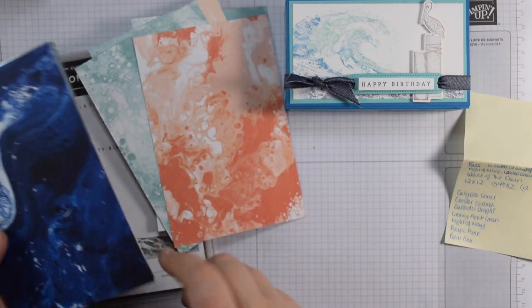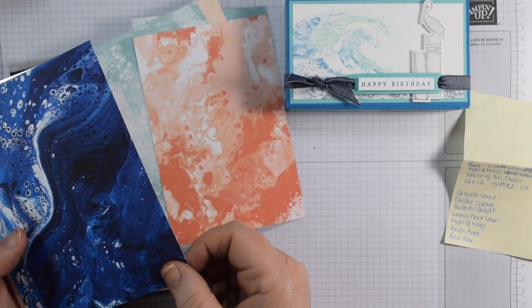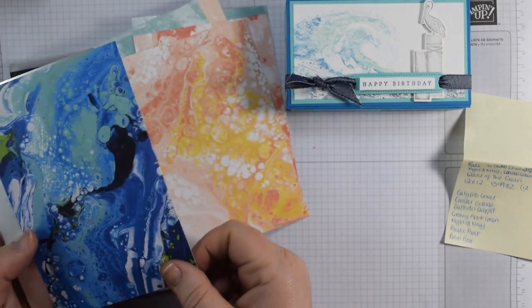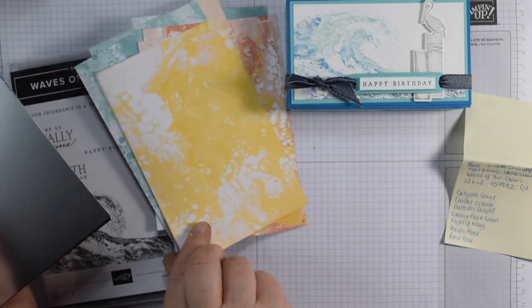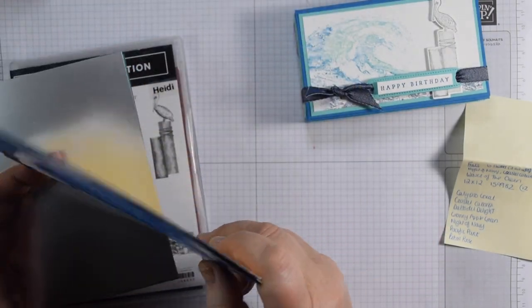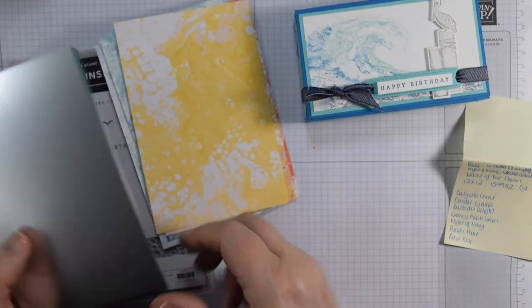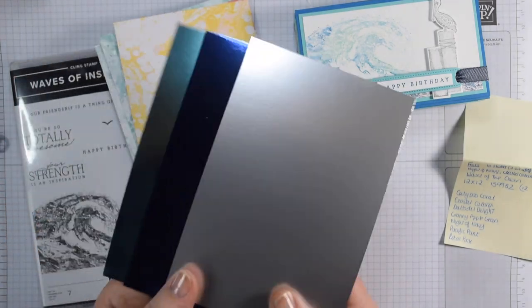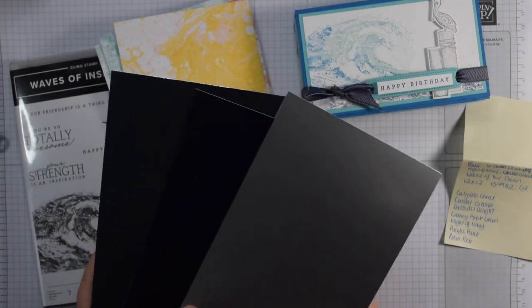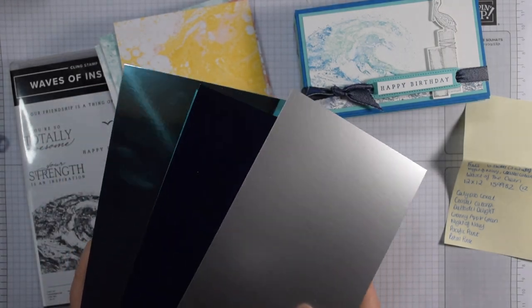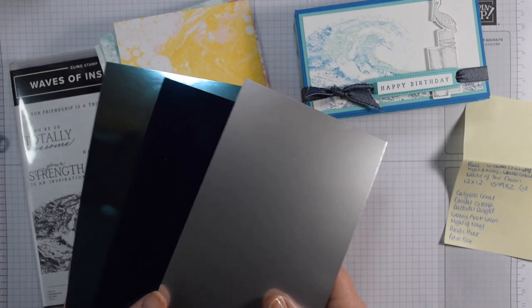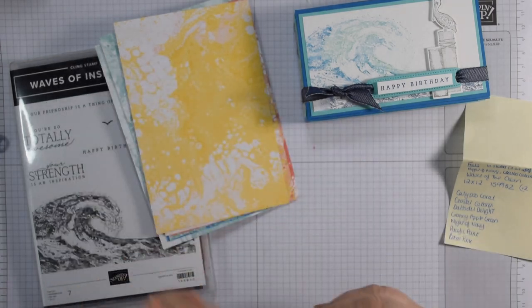If you love seaside scenes, obviously Waves, these are perfect. They come in 12 by 12, two sheets each of six designs. You can see Pacific Point, Night of Navy, Calypso Coral, Daffodil Delight, and Granny Apple Green. Then you've got these beautiful foils as well - Night of Navy, Coastal Cabana, and this lovely silver smoky slate.